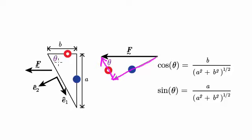Now let me introduce this angle theta right here. Theta is not given to us — I'm just introducing it as a little reference. Theta is the angle between the horizontal and something aligned with the ê₁ direction. So theta is this angle right here on that vector triangle.